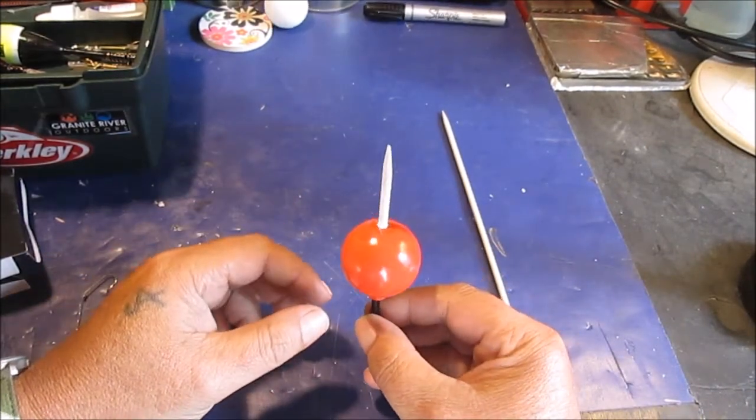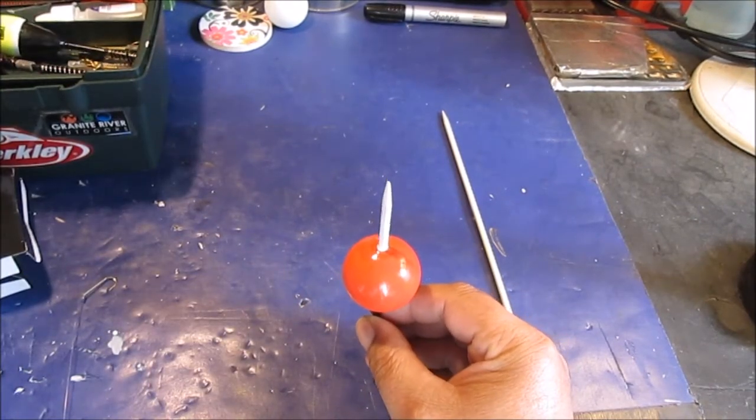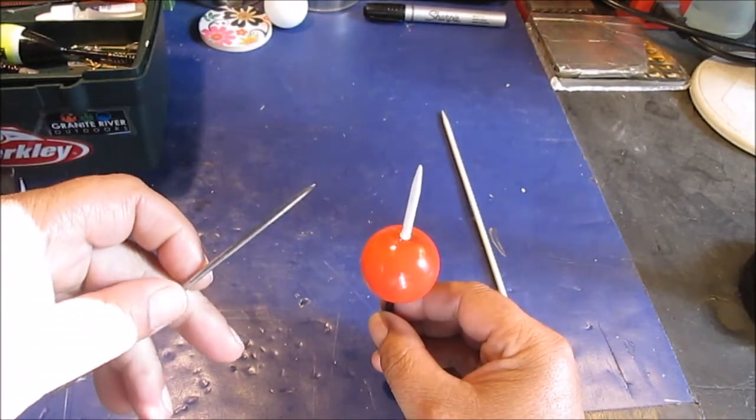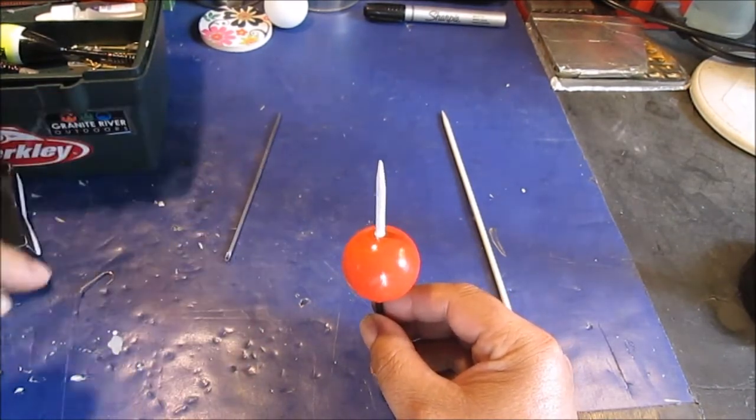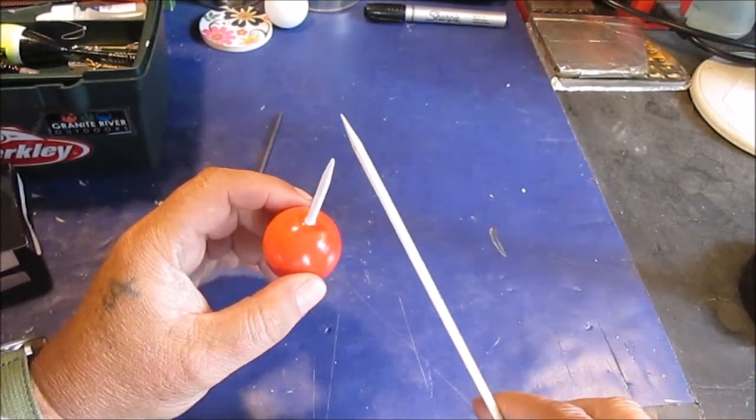What we did was we took a pin, metal rod, heated it up to make a small hole, very small hole. Then we enlarged the hole with the stick.